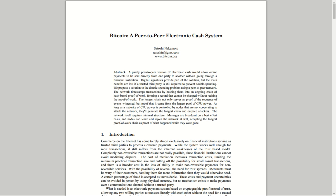'We propose a solution to the double spending problem using a peer-to-peer network. The network timestamps transactions by hashing them into an ongoing chain of hash-based proof of work, forming a record that cannot be changed without redoing the proof of work. The longest chain not only serves as proof of the sequence of events witnessed, but proof that it came from the largest pool of CPU power. As long as the majority of CPU power is controlled by nodes that are not cooperating to attack the network, they'll generate the longest chain and outpace attackers. The network itself requires minimal structure. Messages are broadcast on a best-effort basis and nodes can leave and rejoin the network at will, accepting the longest proof of work chain as proof of what happened while they were gone.'